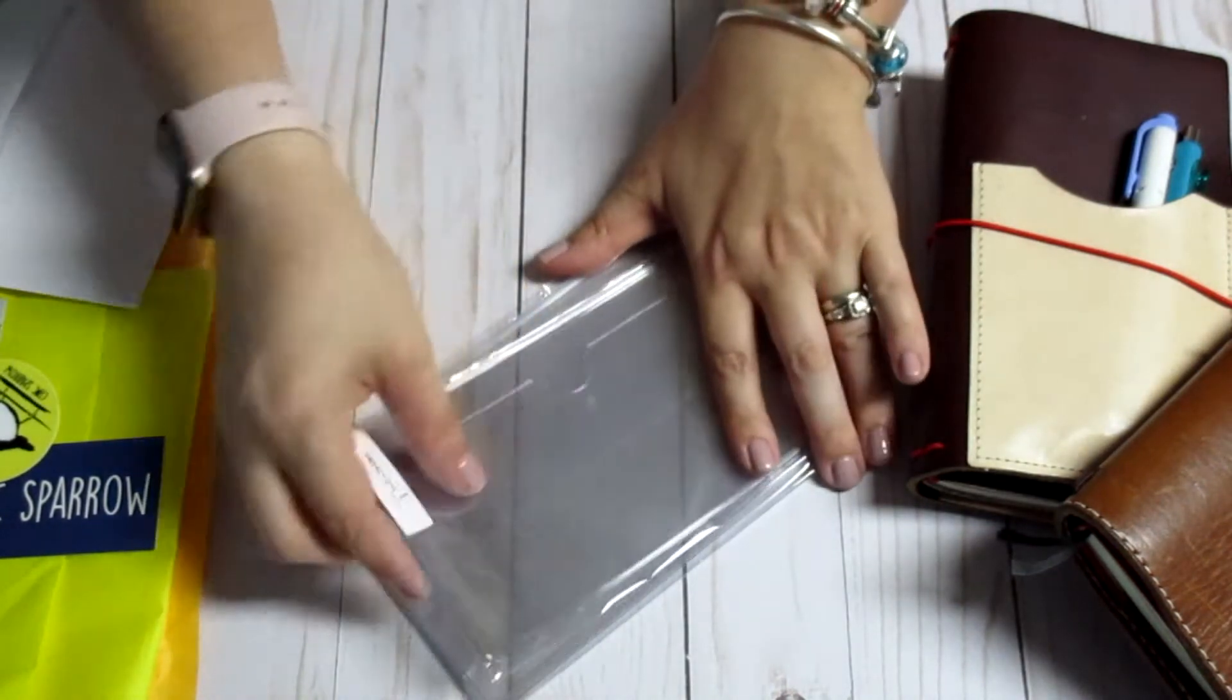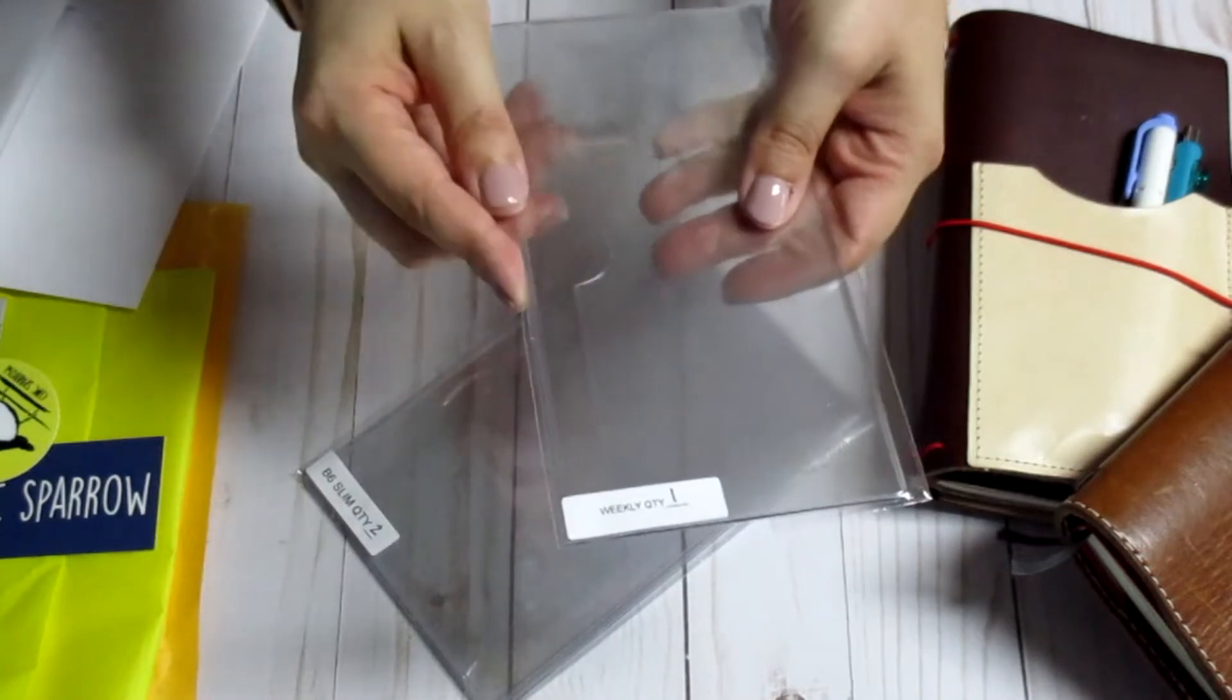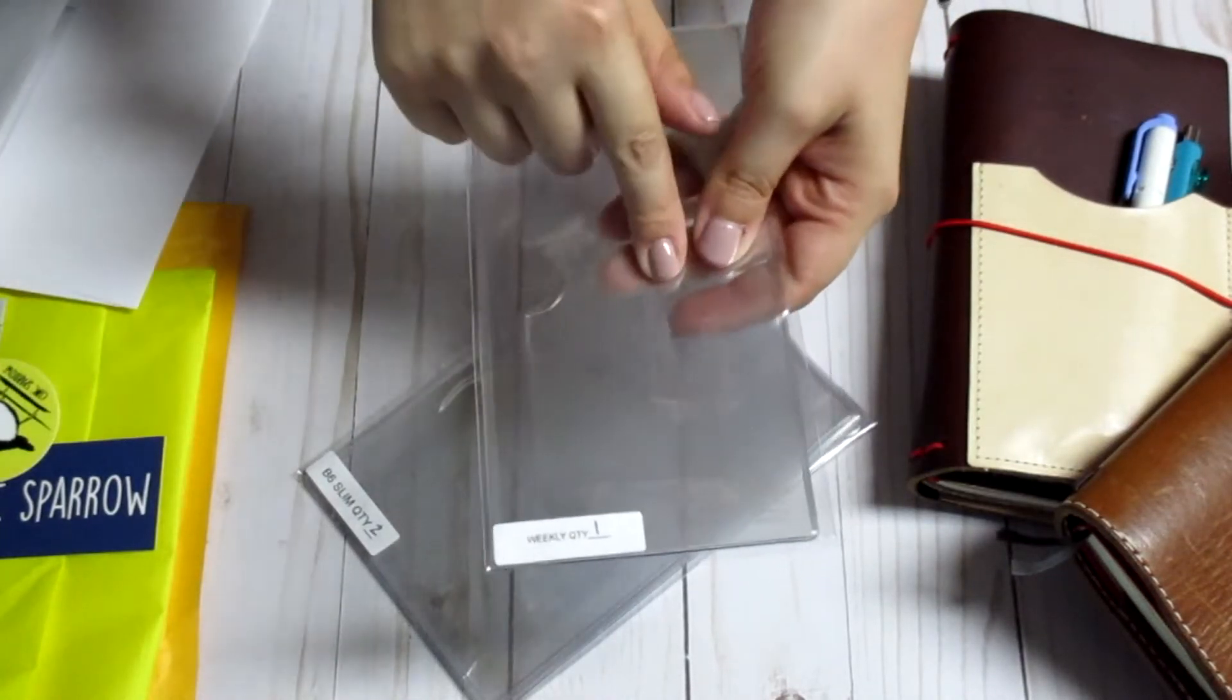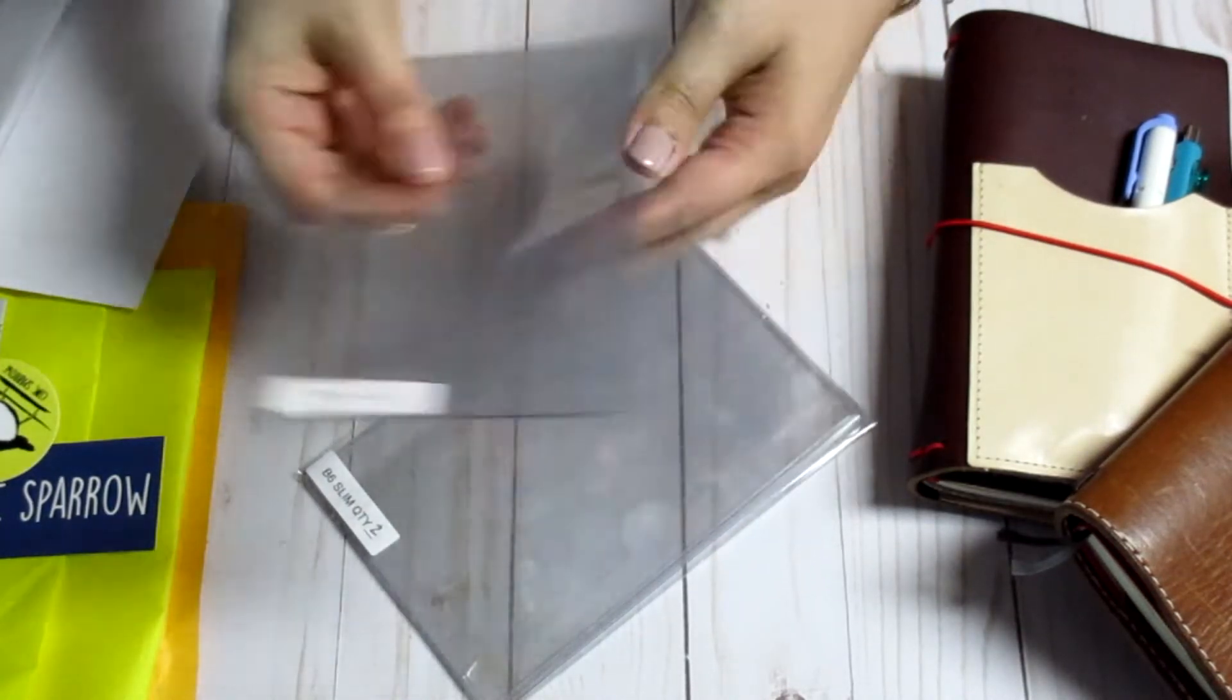So what I got was one of the new dashboard inserts for my Hobonichi Weeks and I actually got two of them for a B6 slim size that I'm hoping will work inside of my Sojourner that I just got. I'm thinking it should.